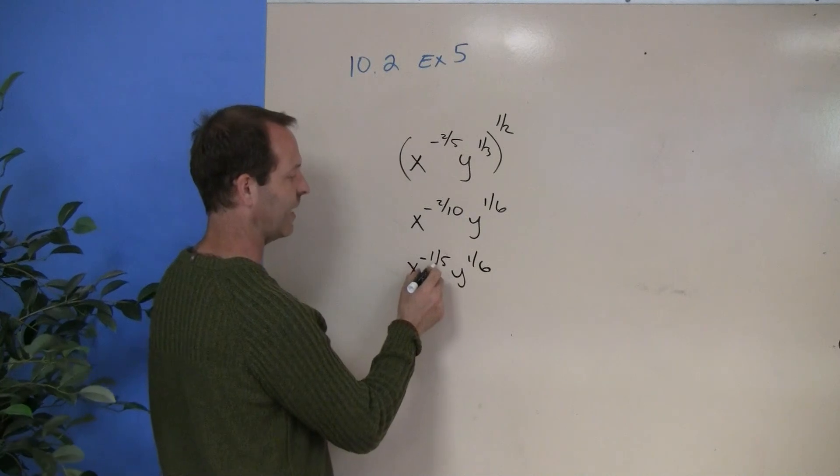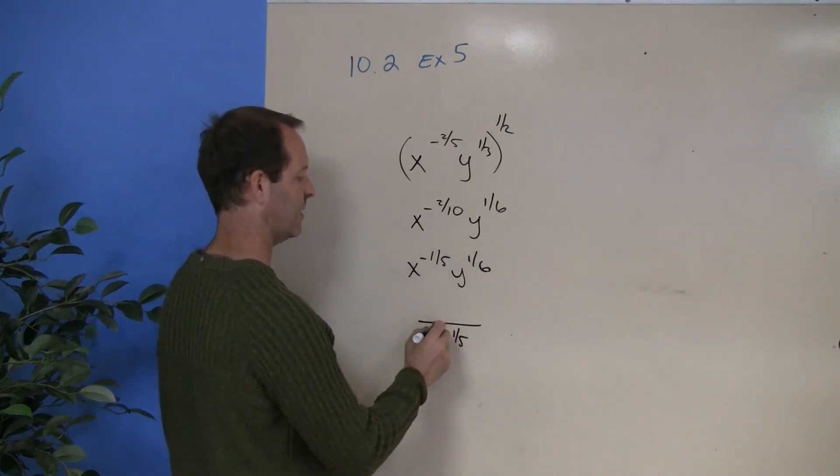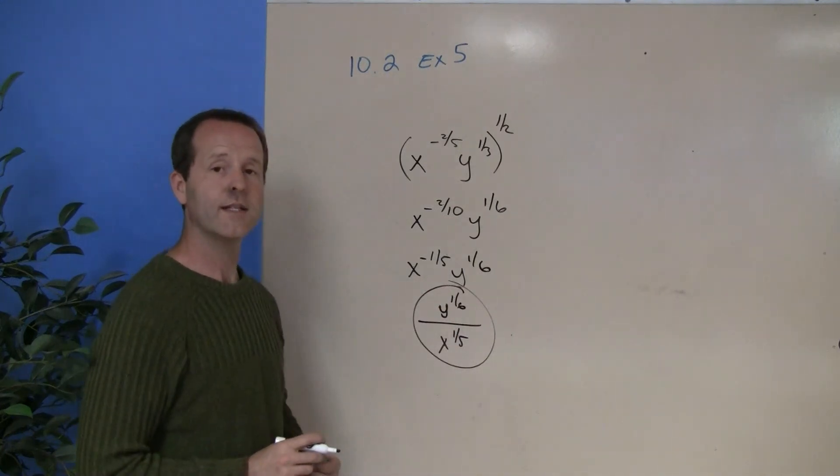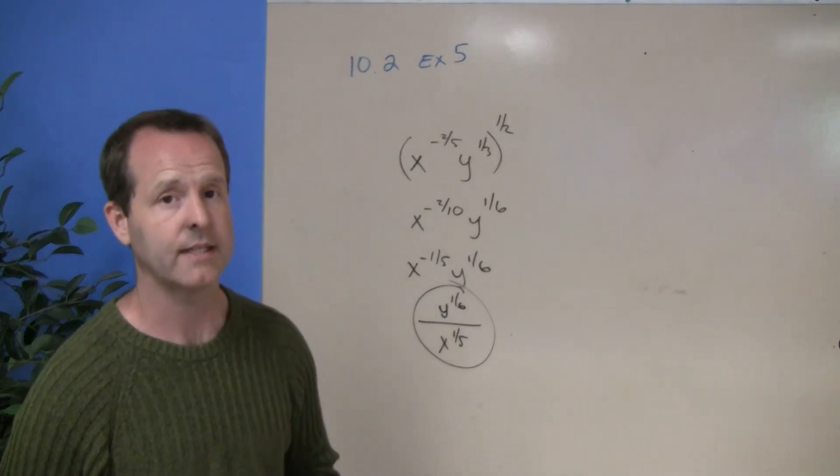And remember, that negative, to get rid of it, I put in the numerator or the denominator. So it becomes x to the 1/5th in the denominator, and then the numerator, that 1/6th, he stays. So I have y to the 1/6th over x to the 1/5th. And that problem now is cleanly and simply reduced.